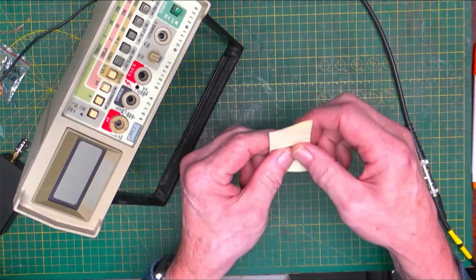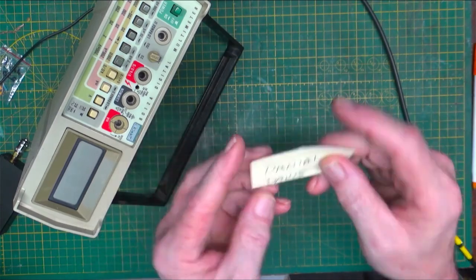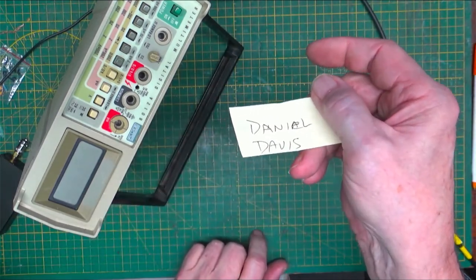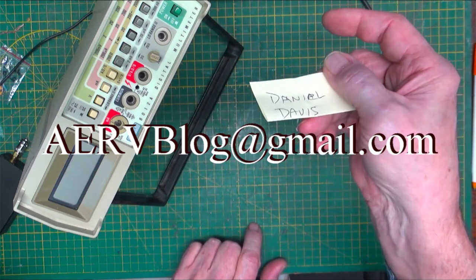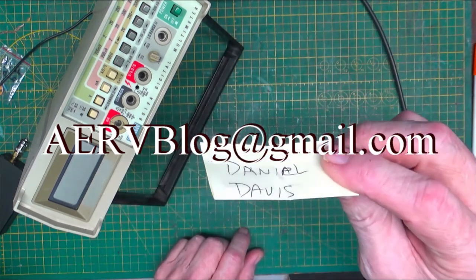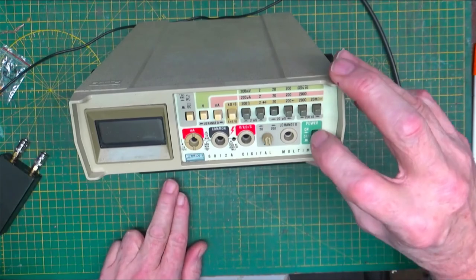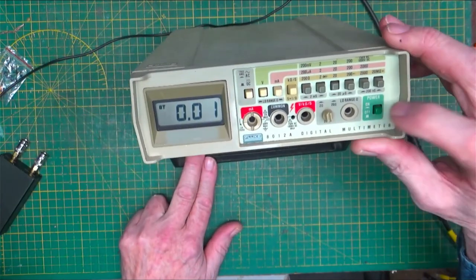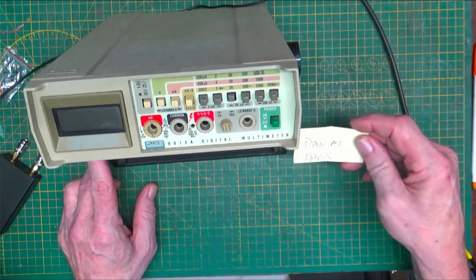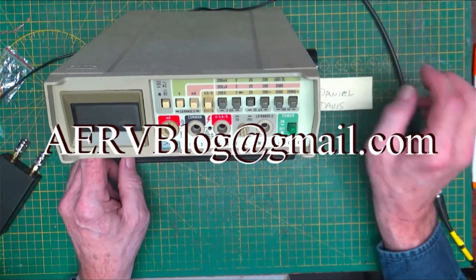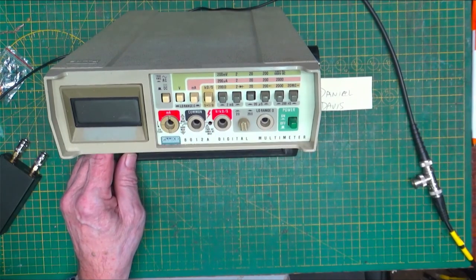Open it up. Daniel Davis. Daniel Davis won the Fluke. So if you get a hold of me at aervblog.com, email me at aervblog.com with your pertinent information, we'll get this thing out to you. Congratulations Daniel, I hope you enjoy it. It is a nice little meter. You can see battery still works, does charge. So anyway, Daniel Davis, give me an email at aervblog.com. Hey thanks for watching guys and we'll do some more stuff later. Till next time.